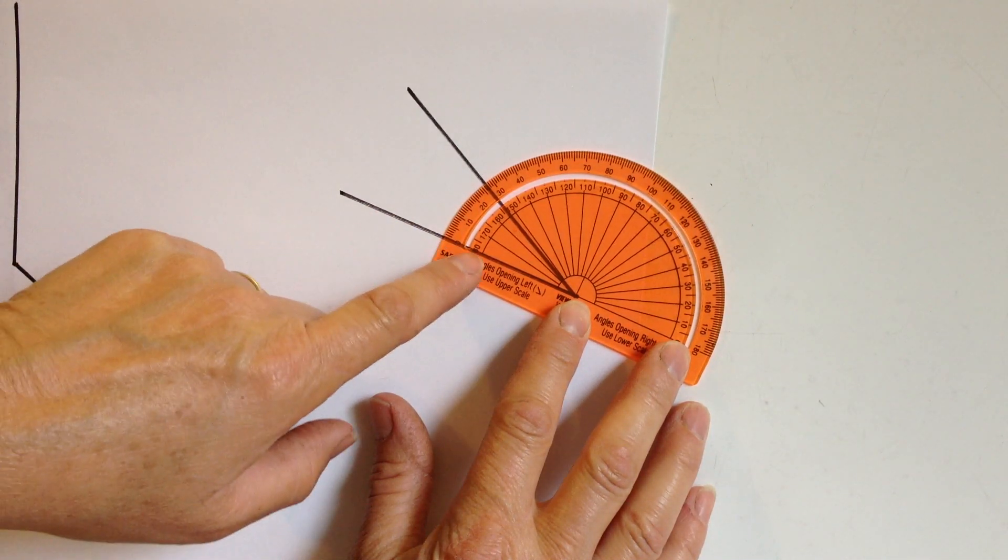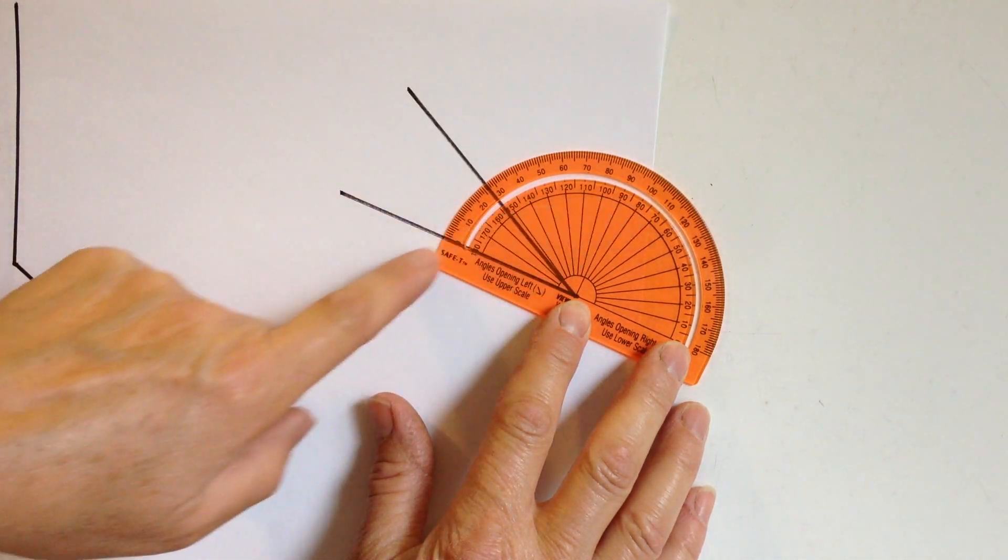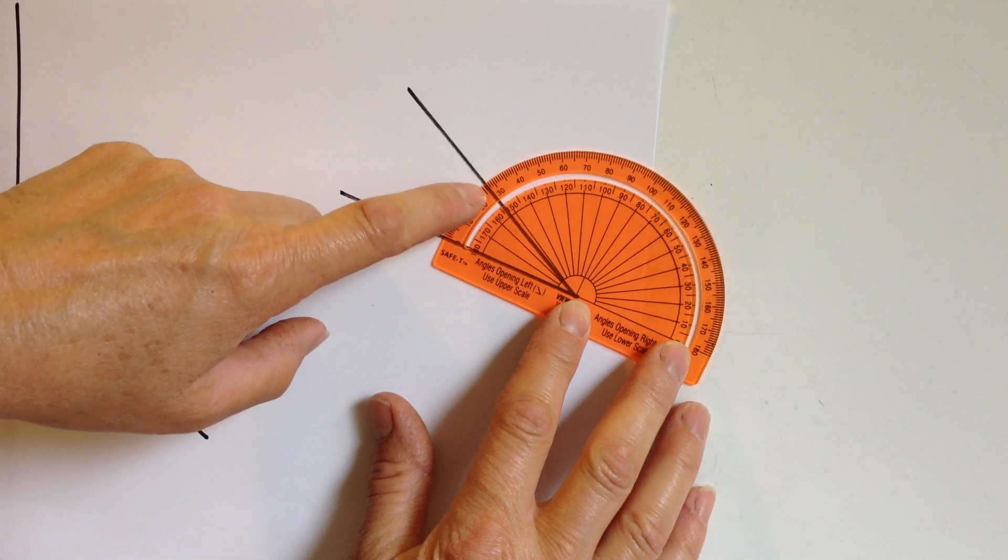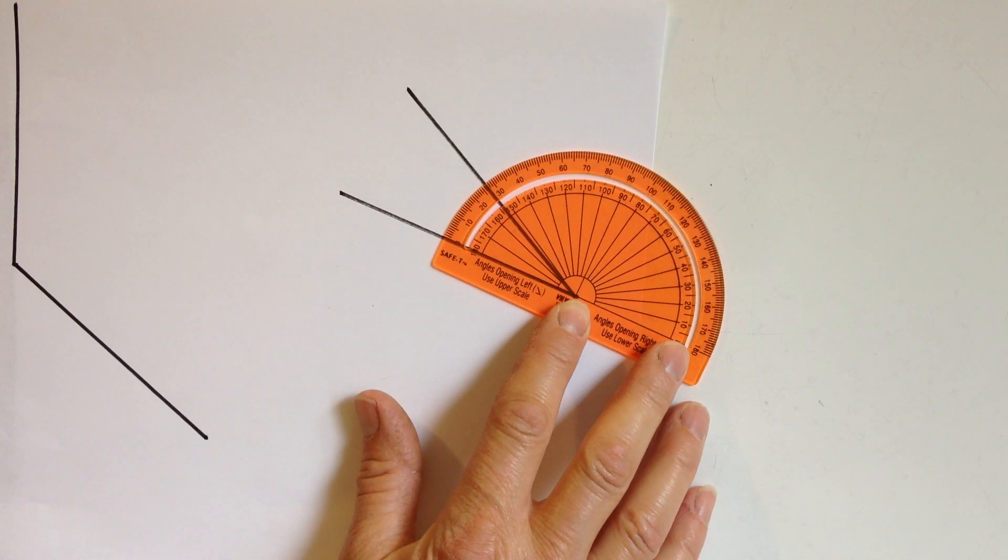It looks like my angle starts to count. Make sure you're counting upwards because there's an inner scale that counts downwards and an outer scale that counts upwards: 10, 20, 25, 26, about 26 and a half degrees.